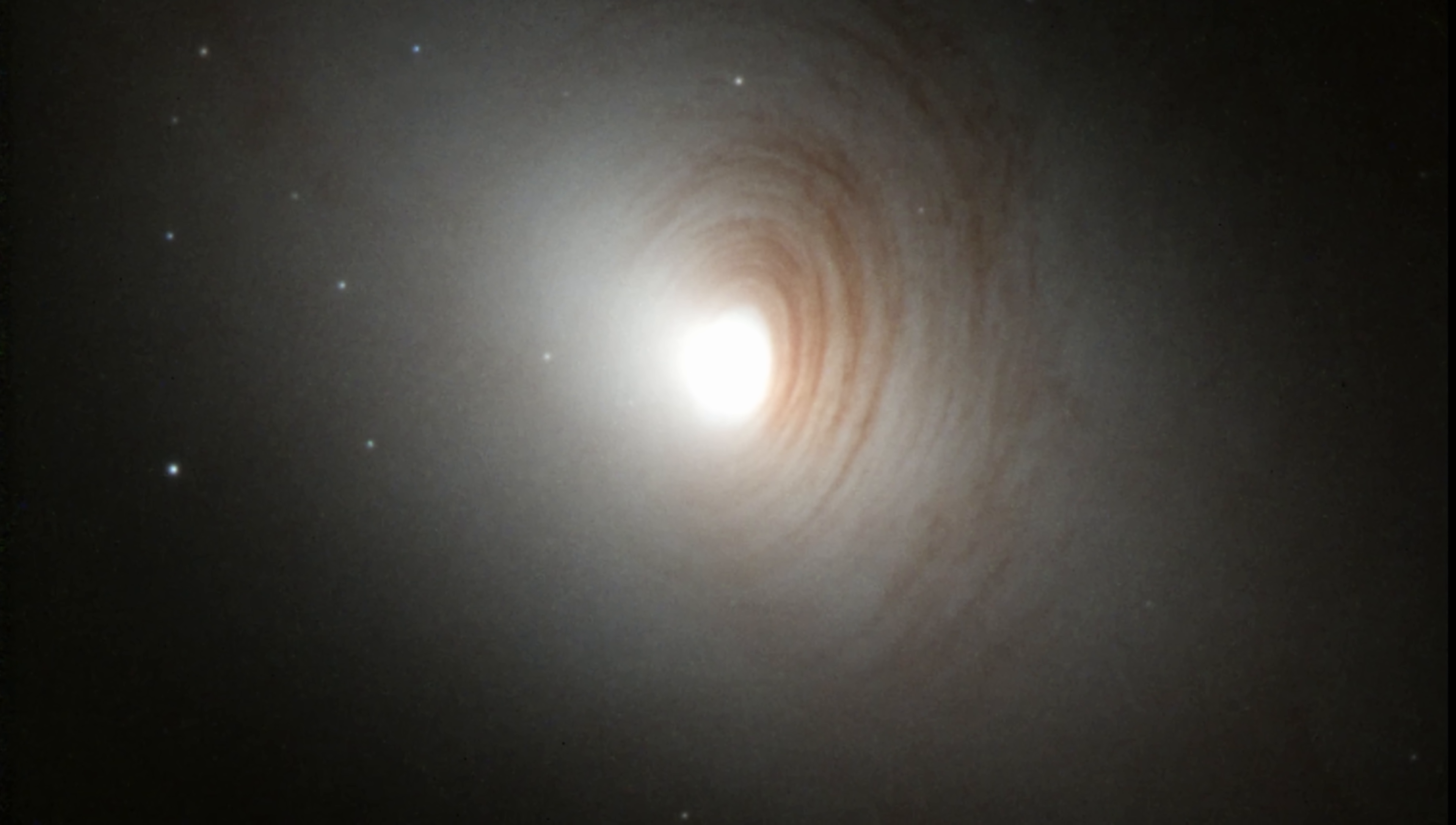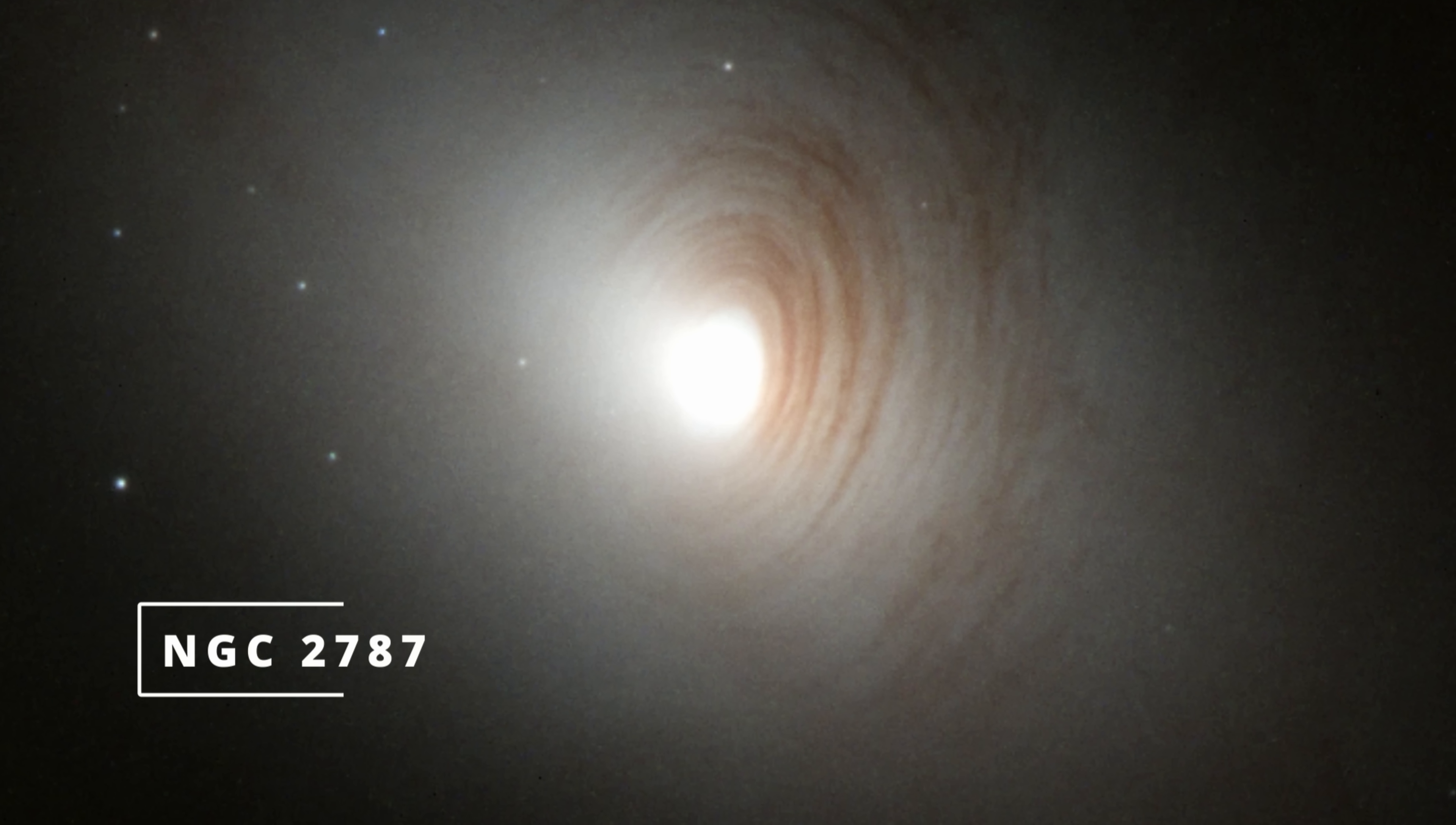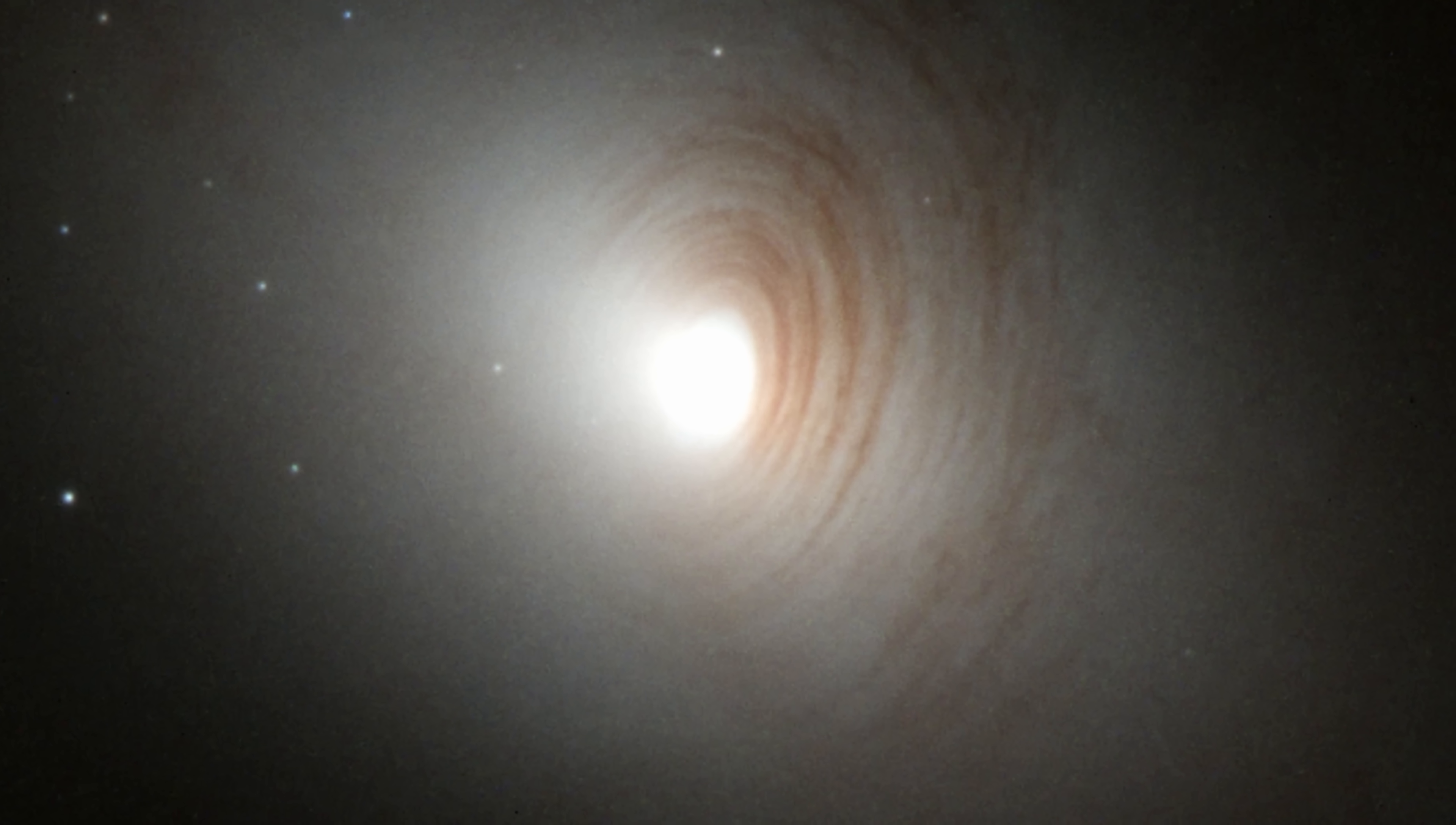With some galaxies, such as this lenticular galaxy NGC 2787, sort of serving as a kind of first step in this evolution. Here there are no spiral arms and the galactic bar is still really tiny, still growing in size. But I guess one important question is, how exactly does all of this form?